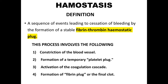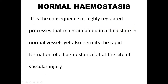Hemostasis, as far as definition is concerned, is a sequence of events leading to cessation of bleeding by the formation of a stable fibrin-thrombin hemostatic plug. This process involves: number one, constriction of blood vessel; two, formation of a temporary platelet plug; three, activation of the coagulation cascade; and four, formation of the fibrin plug or the final clot.